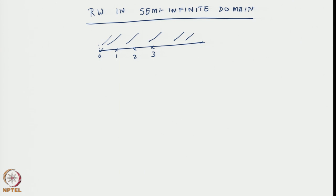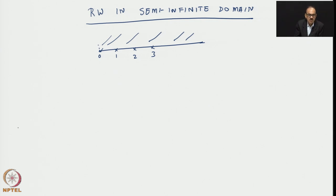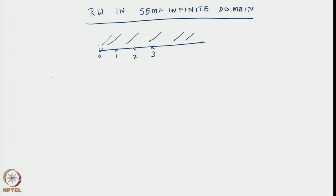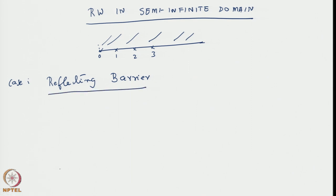That means if a walker lands at the point 0, which is allowed, we have to specify what will happen. So we can disallow transition to the left, but then we must say something about transition either to the right or onto itself. These are discussed under two different cases. One is the case of a reflecting barrier, which is a semi-infinite domain problem — also a restricted domain problem. So what is meant by a reflecting barrier?